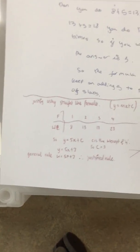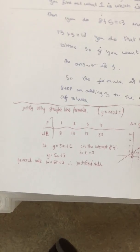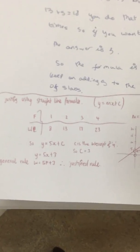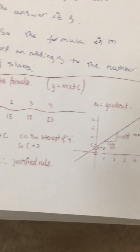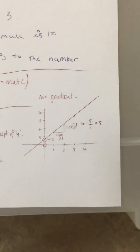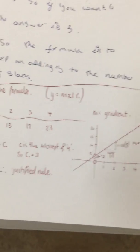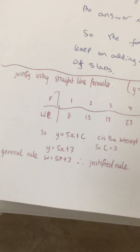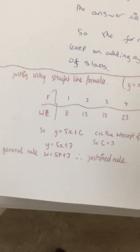When I found my general rule at the beginning, I used linear or arithmetic sequences — spotting that 5×1+3=8 and 5×2+3=13, so the rule is 5f+3. A justification of the general rule uses a straight line graph: plot the points from the table, find the gradient using rise over run, which is 5, correlating to the slope m. The y-intercept is 3, giving the same equation y = 5x + 3. Therefore the rule is justified.